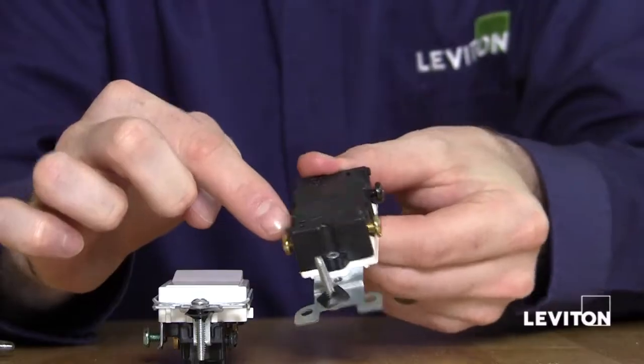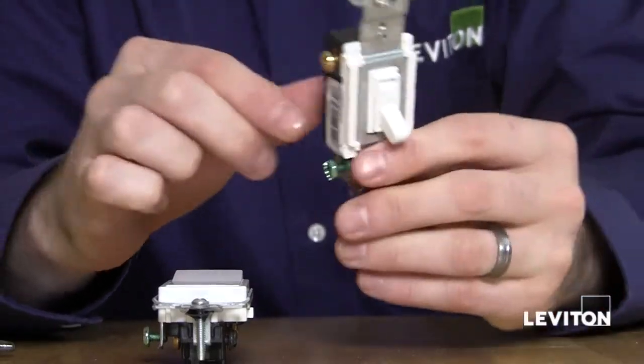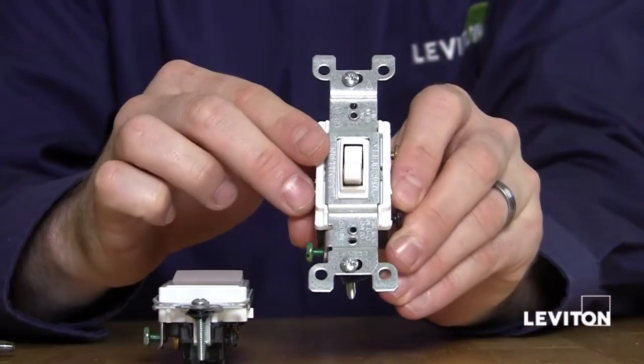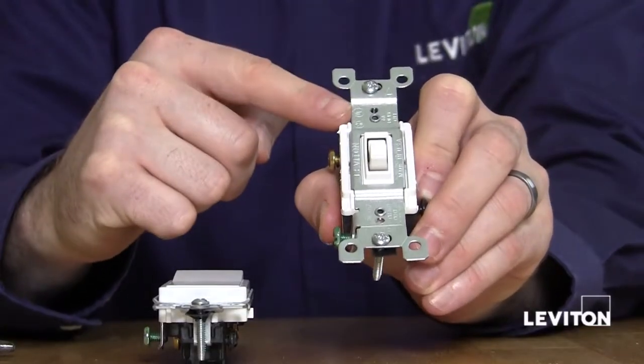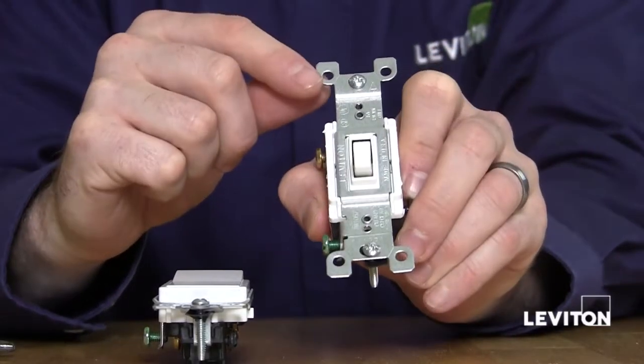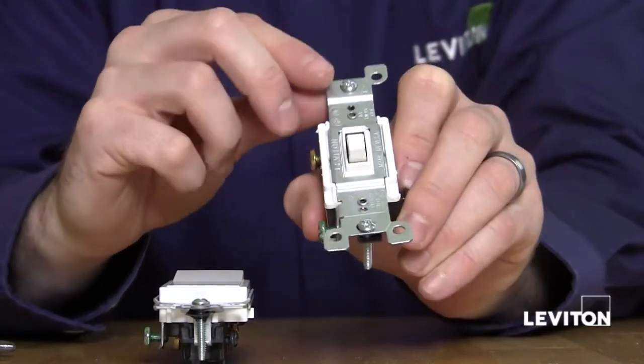It also has two brass terminals. These are for your traveler wires. Traveler wires are the wires that run between the two three-way switches. This is what allows you to turn the lights on or off from either switch.